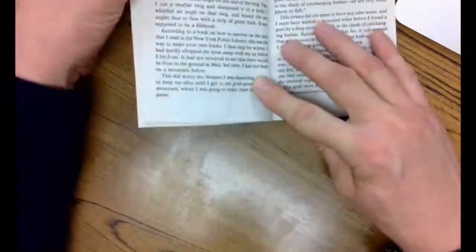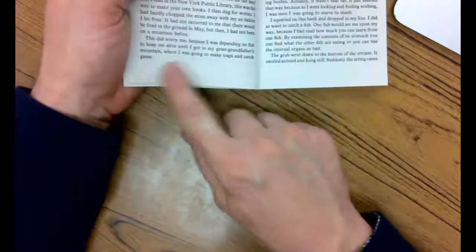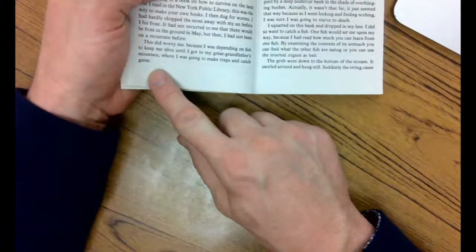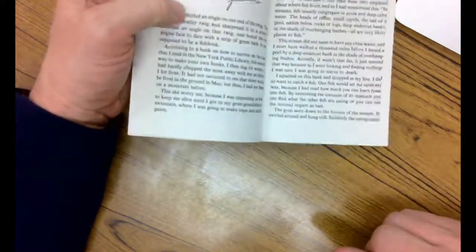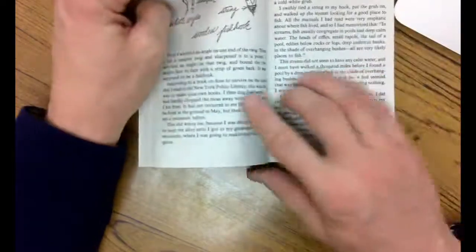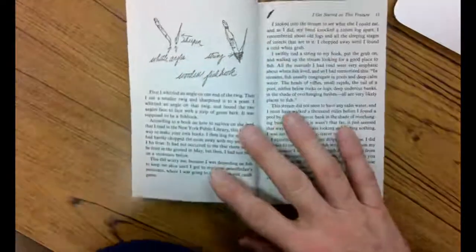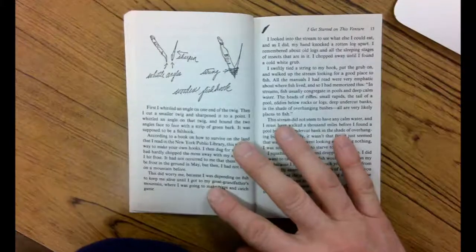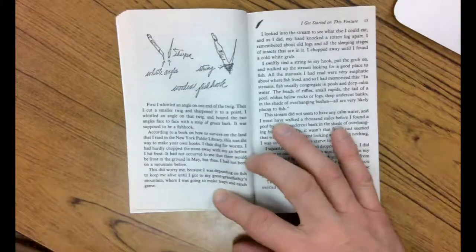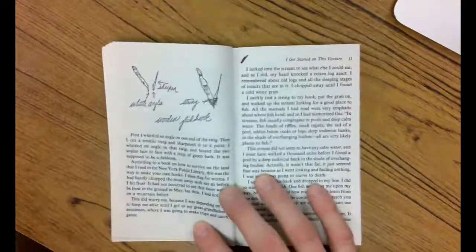Alright guys, a couple things before we get started. Yesterday we finished up here where he was going to make traps to catch his wild game. For whatever reason, my video stopped kind of short. I kept reading for another three pages and realized that was it. Well, I didn't start it over. I just thought I'd read a little more in a day. So he's going to make traps to catch wild game, but he wanted to catch these fish first. Here we go.